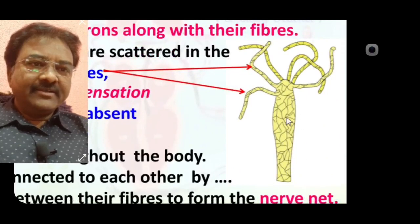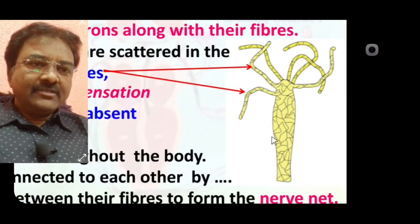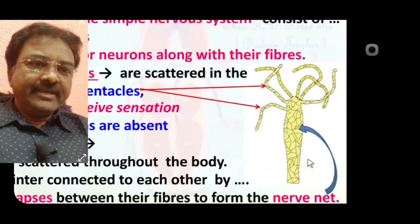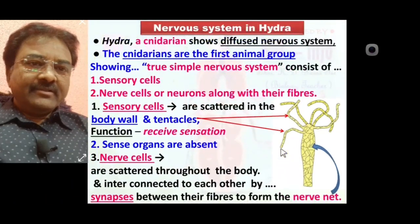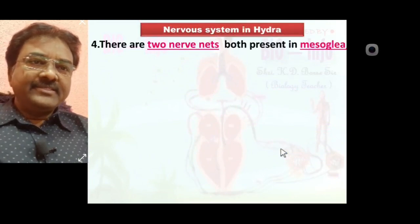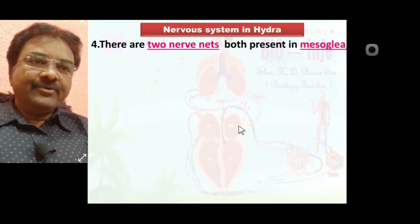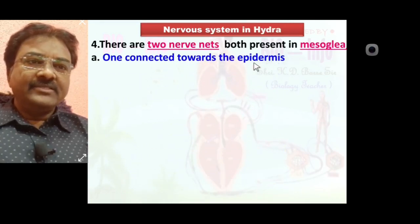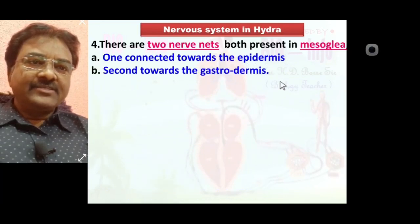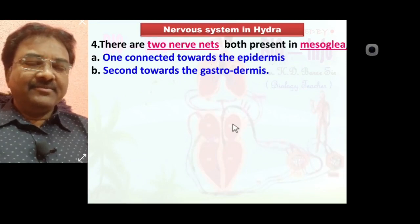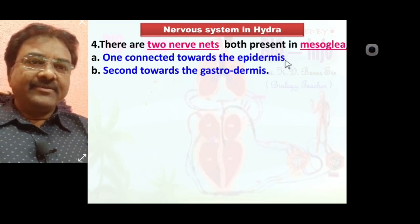There are two nerve nets, both present in the mesoglea of hydra. One is connected towards the epidermis and the second is connected towards the gastrodermis. This nerve net is visible in the proper body of hydra, where nerve cells are interconnected with each other.